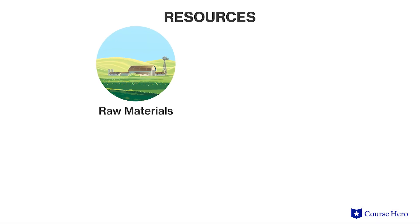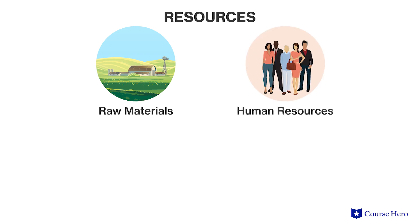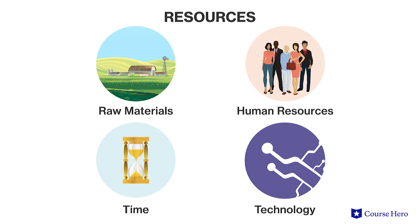Countries use resources to produce the outputs that society wants. Resources can include raw materials such as land and other natural resources from the physical environment, as well as human resources such as the number of workers available. Time is also a resource that must be allocated because there are a limited number of hours in the day. There is also a given set of technology available that a society can use to turn their resources into final products.